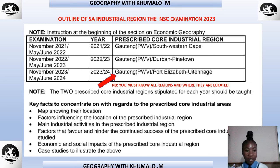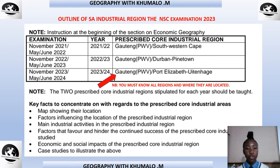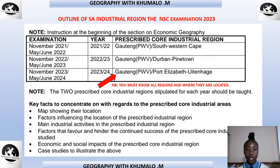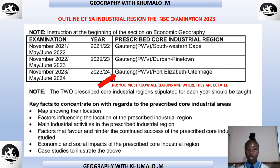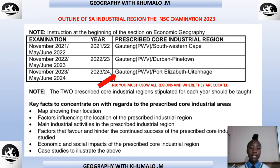A map showing the locations, the factors influencing the location of the prescribed industrial region, main industrial activities in the prescribed industrial region, factors that favor and hinder the continued success, the economic and social impacts, and case studies to illustrate the above.